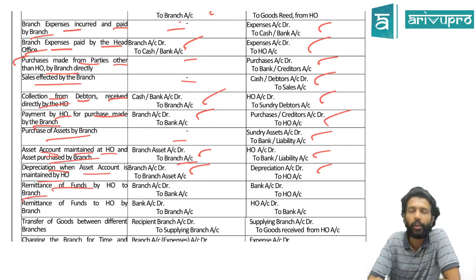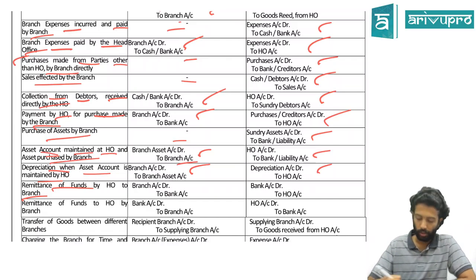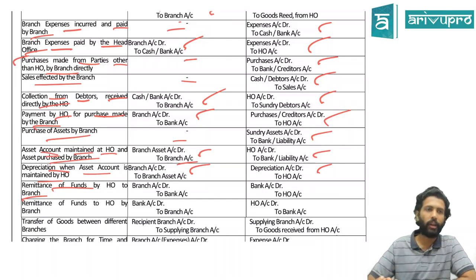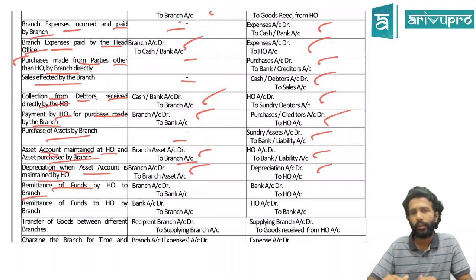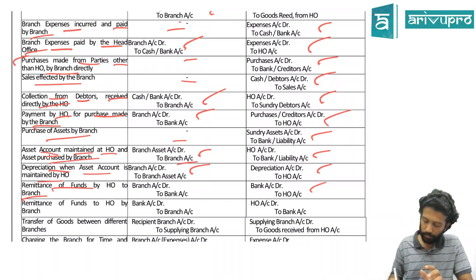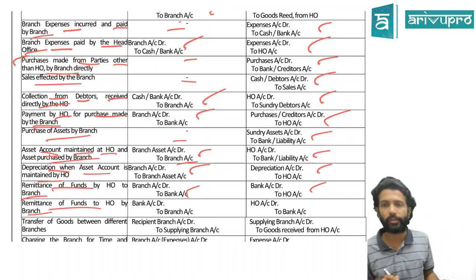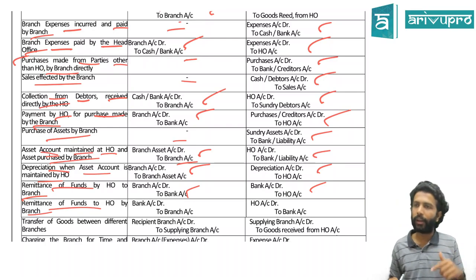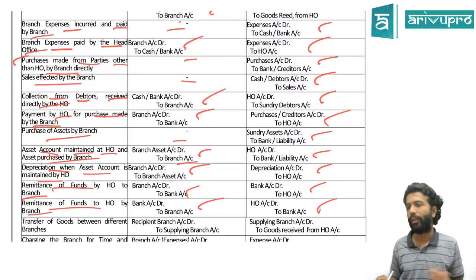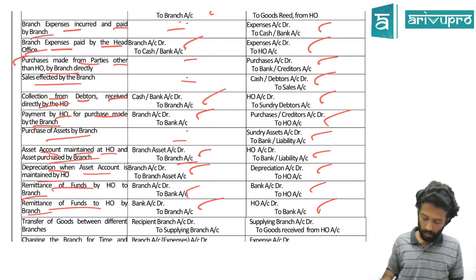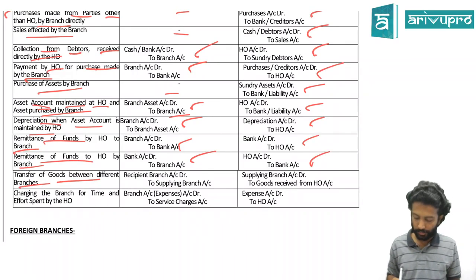Remittance of funds by HO to branch - HO entry: Branch Account debit to Cash or Bank. In branch books: Cash or Bank Account debit to HO Account. Remittance of funds by branch to HO - HO entry: Cash or Bank Account debit to Branch Account. Branch entry: HO Account debit to Cash or Bank Account.